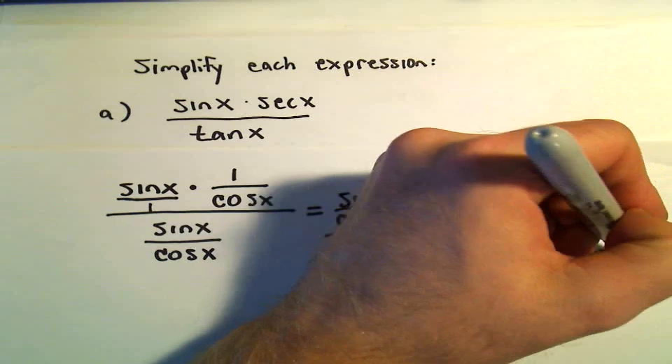However you want to look at it. Or, last but not least, you could even think about it just in terms of fractions. We've got a fraction divided by a fraction. Flip the denominator and make it into multiplication. And basically everything is just going to cancel out. So this first expression is simply going to reduce down to the number 1. So sine times secant over tangent is just another way of writing 1.